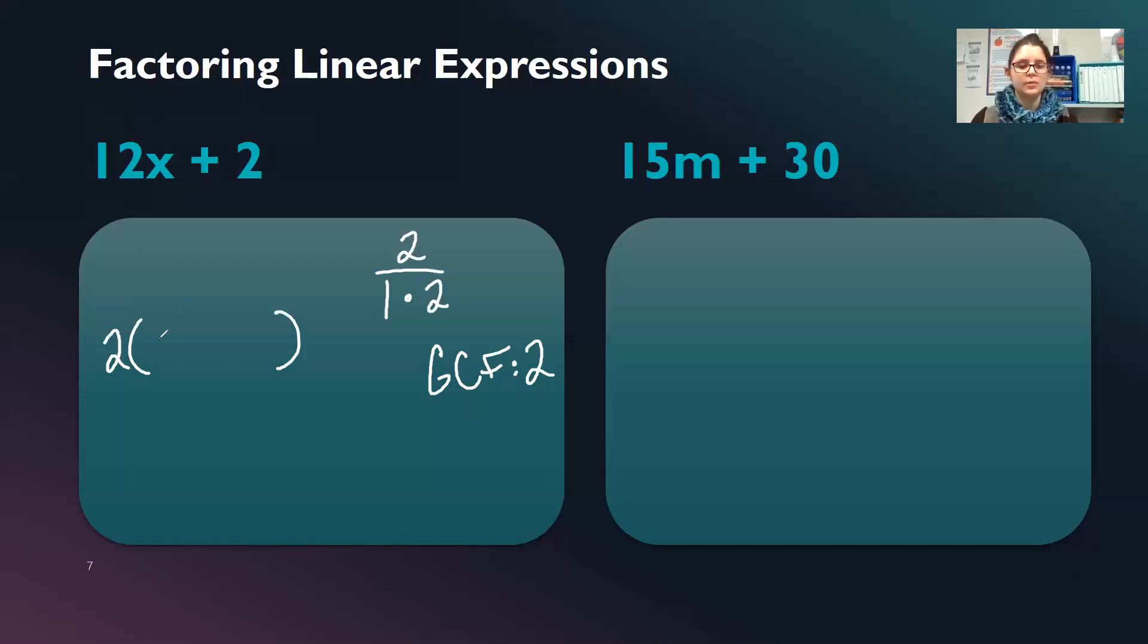2 is what goes outside my parentheses. So now I need to think about what goes inside. So my first term is 12x and we're going to divide that by 2. This leaves me with 6x. That's my first term. My other one is 2 divided by 2 and that gives me 1. So it'll be plus 1. So 12x plus 2 factored is 2 parentheses 6x plus 1 close parentheses.